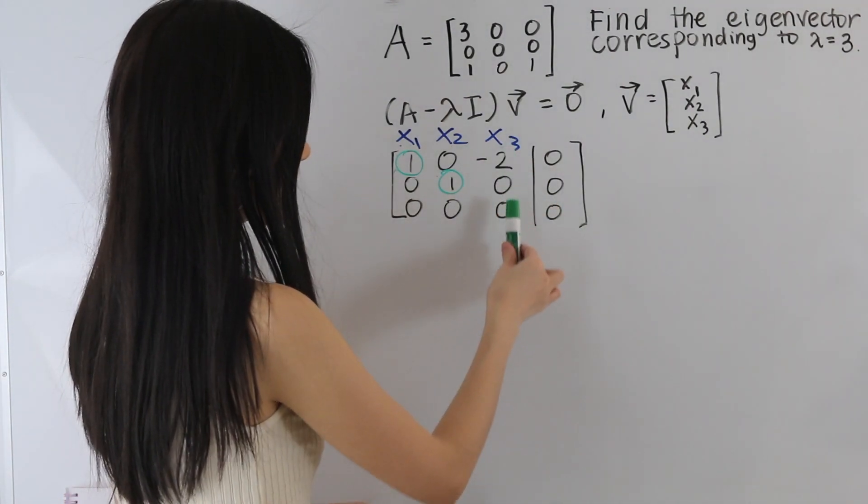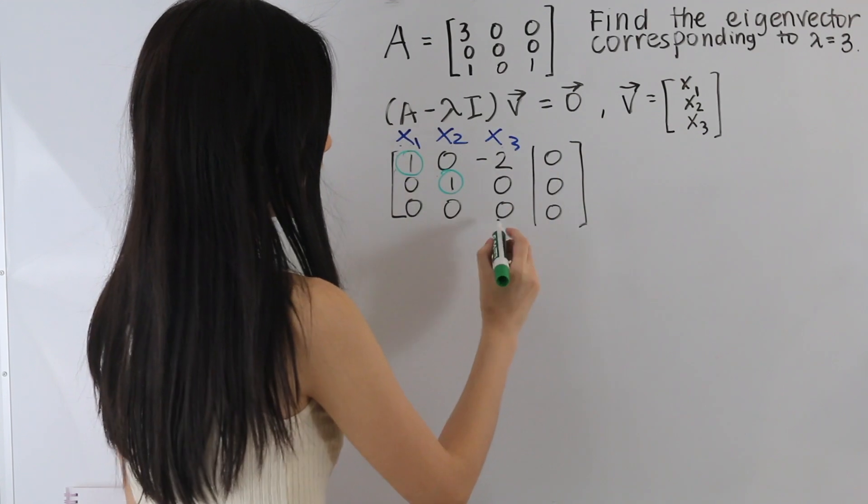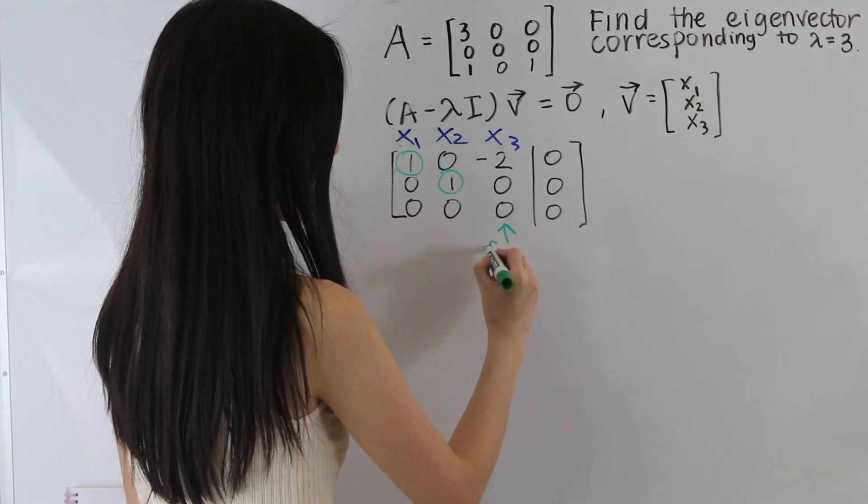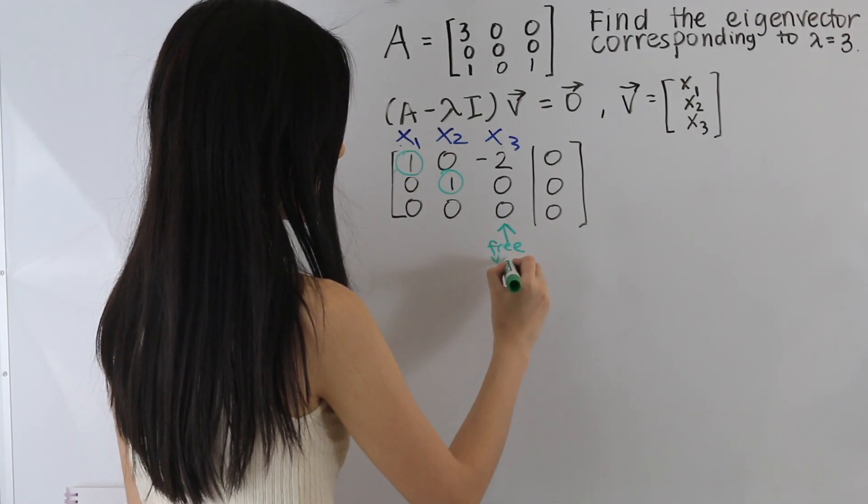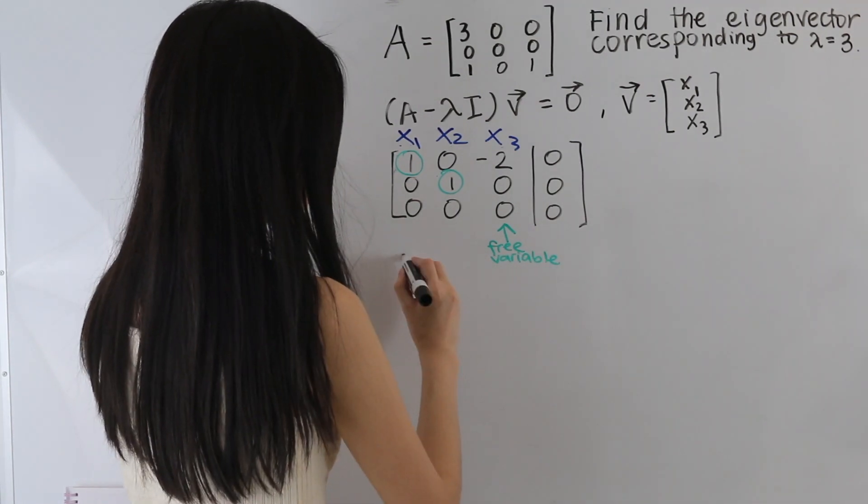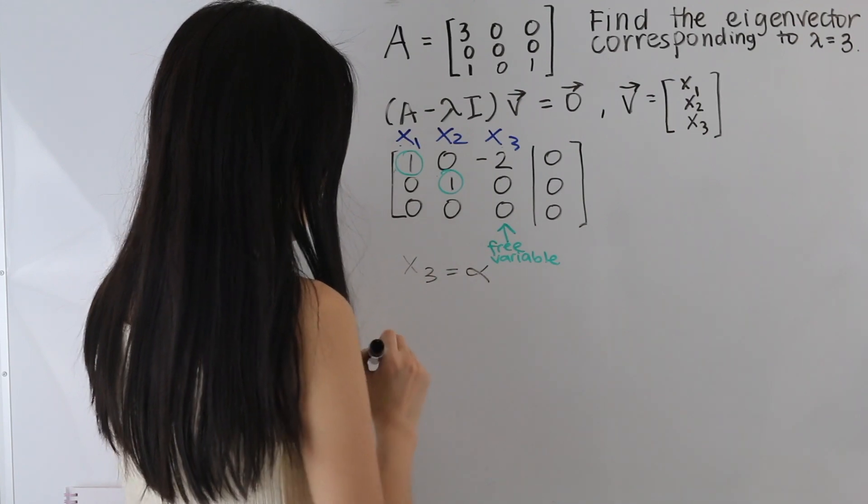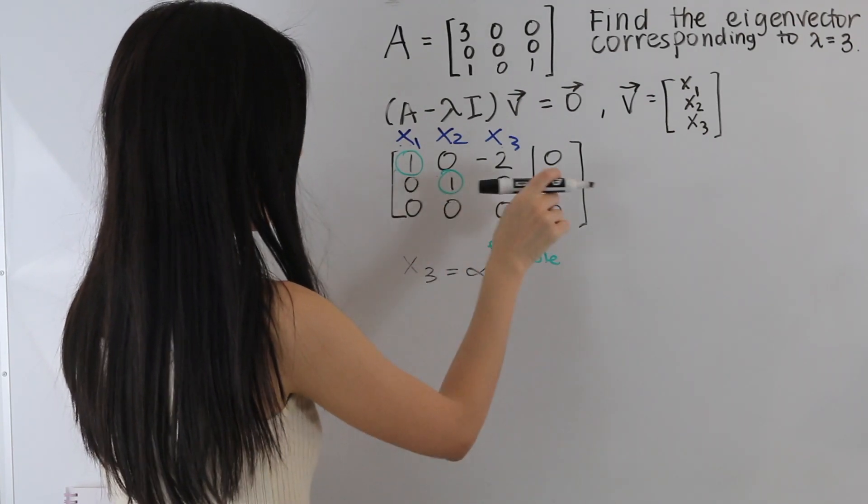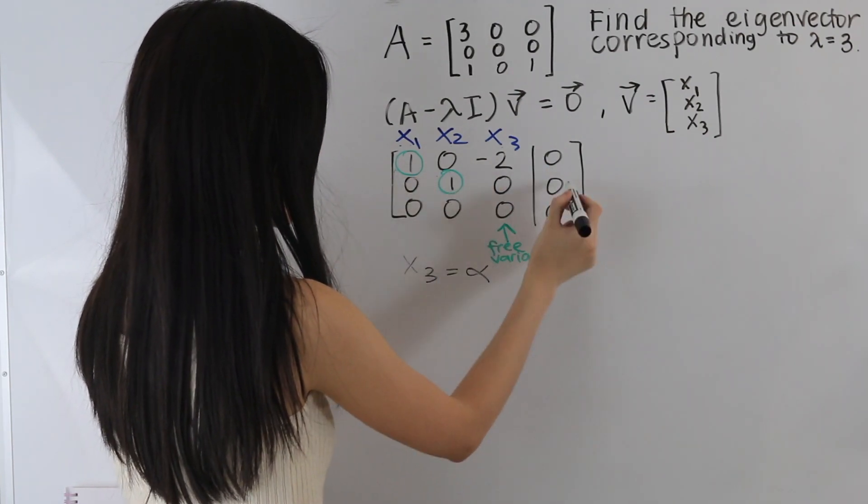So here, because x3 does not correspond to a pivot, x3 is considered a free variable. So we can set x3 to alpha. And then next from this row here, we have x2 is equal to 0.